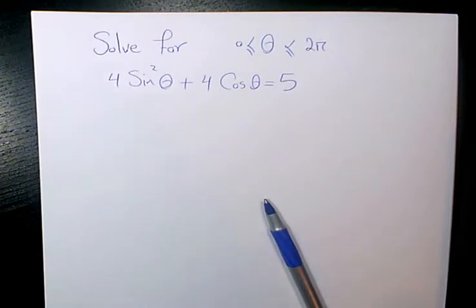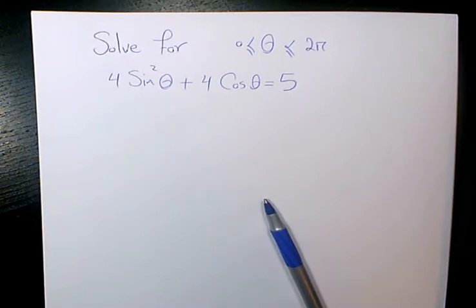In this video I have this equation: 4 sine squared theta plus 4 cosine theta equals 5. I want to solve it for theta between 0 and 2 pi.